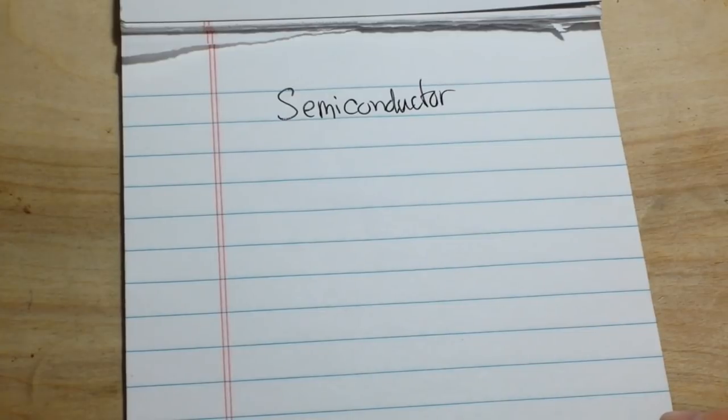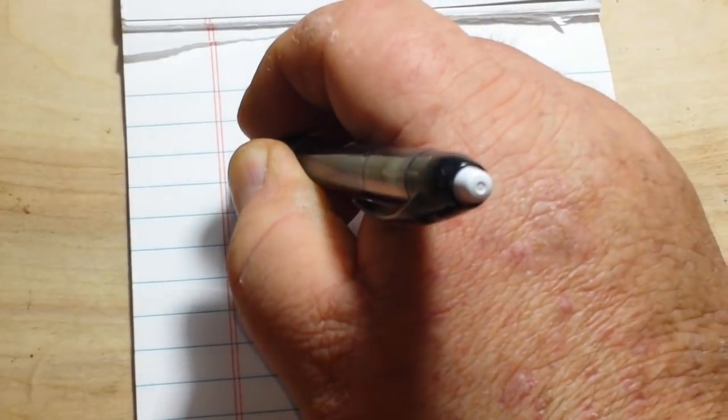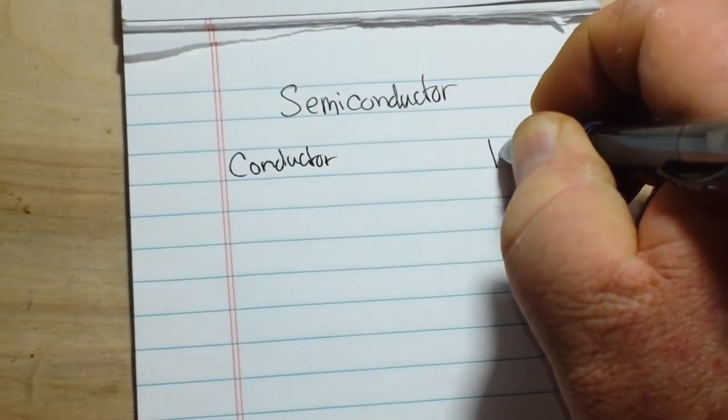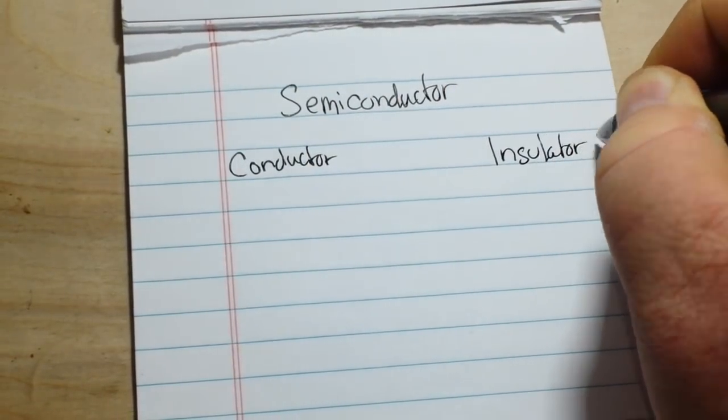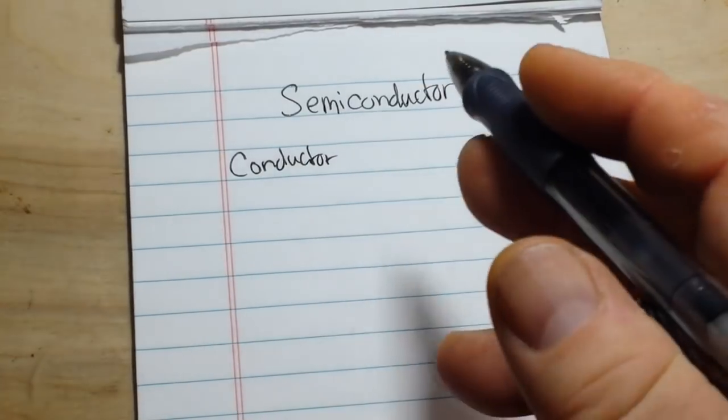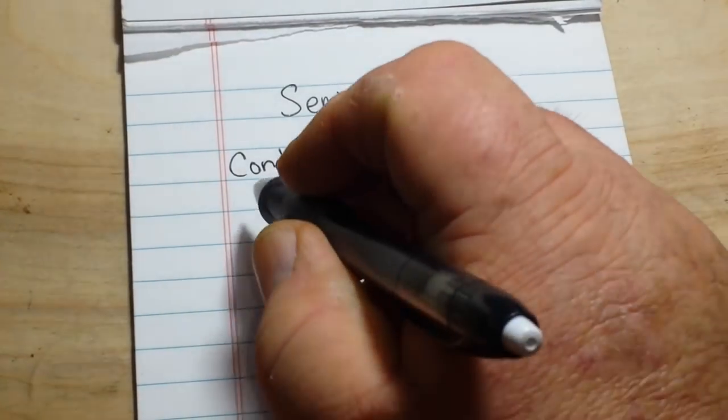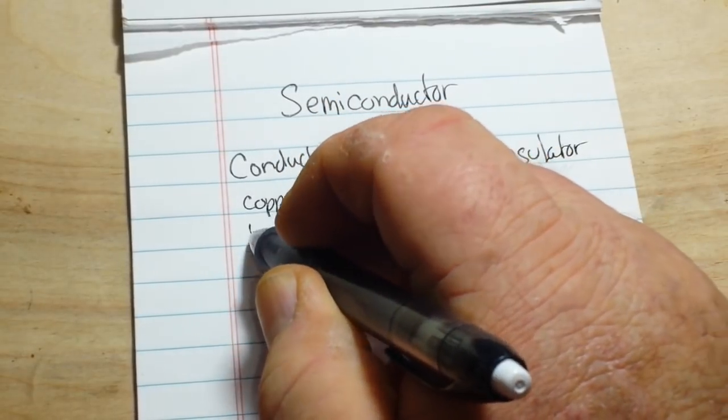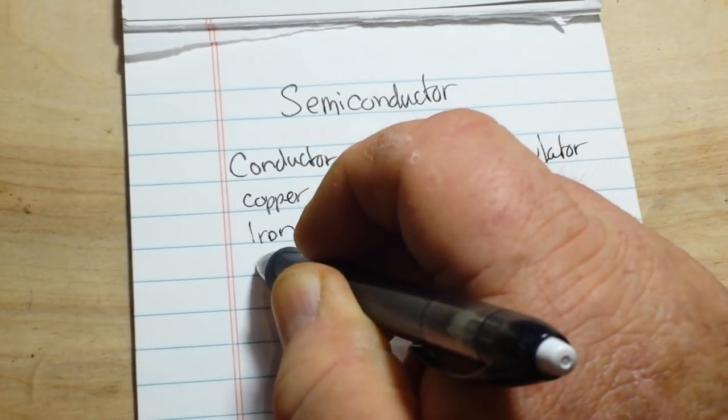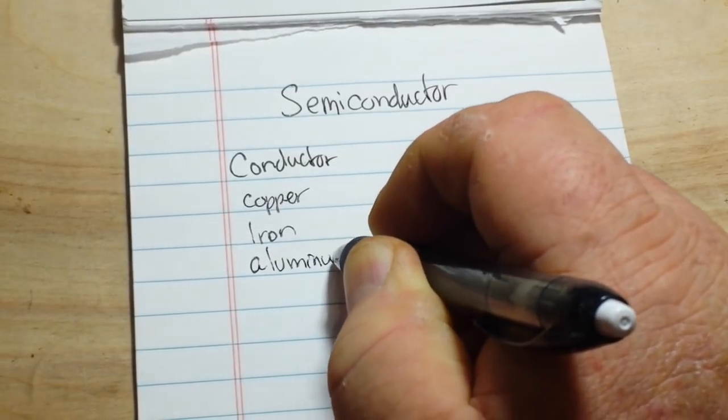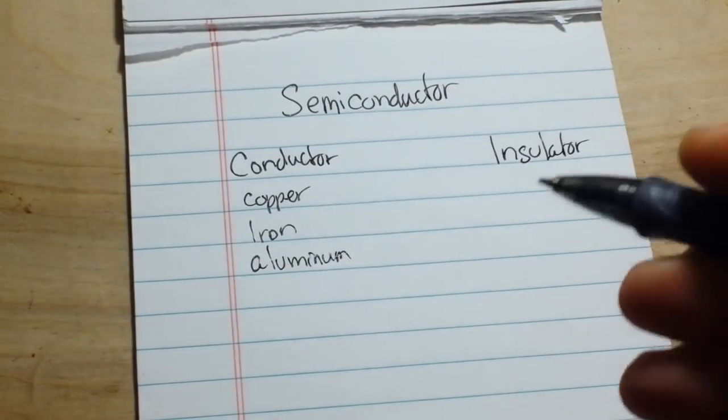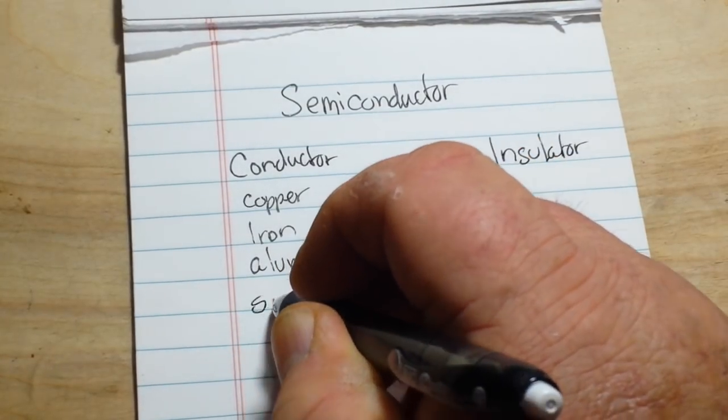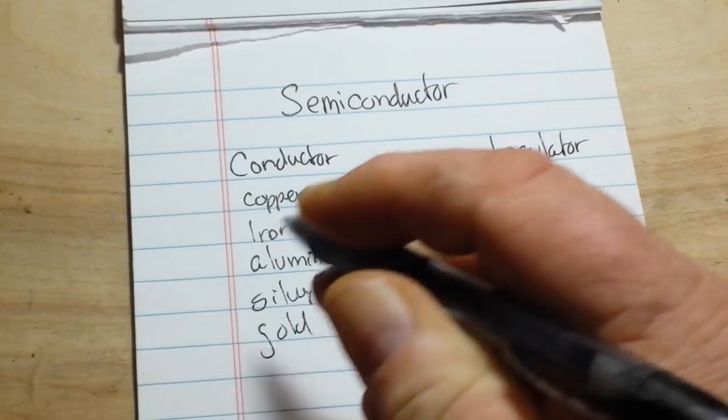So first of all, let's talk about what is a conductor and what is an insulator. Well, conductors are things that conduct current, such as copper, iron, aluminum, silver, gold, etc.